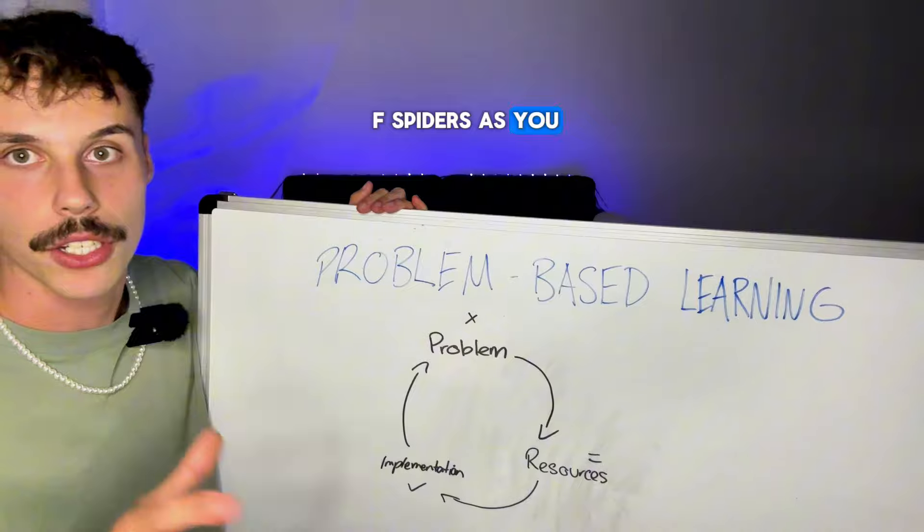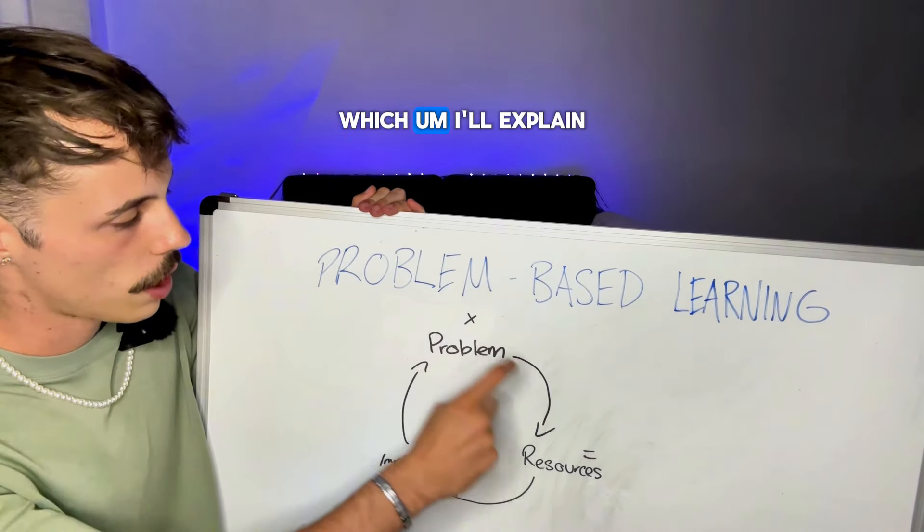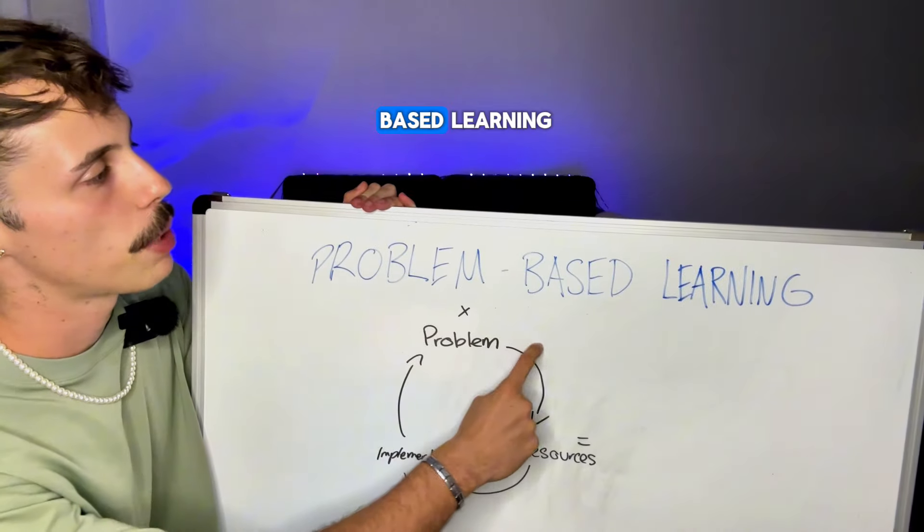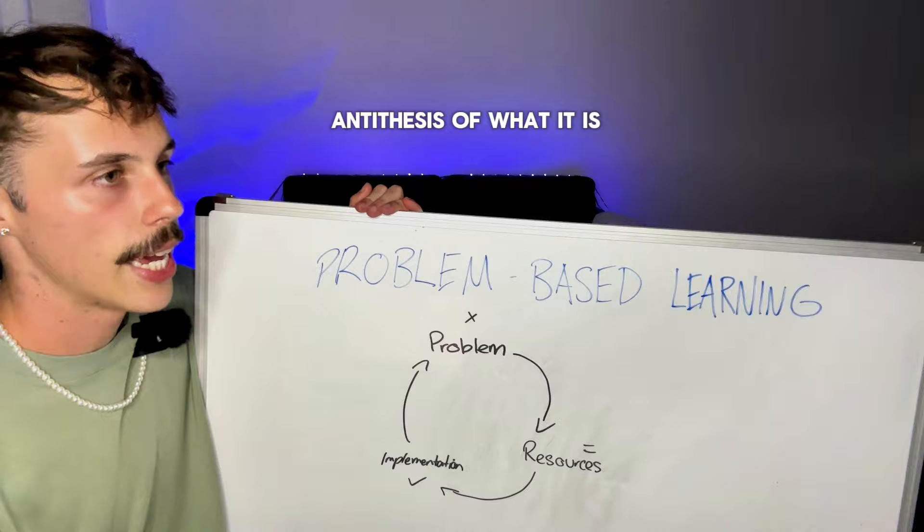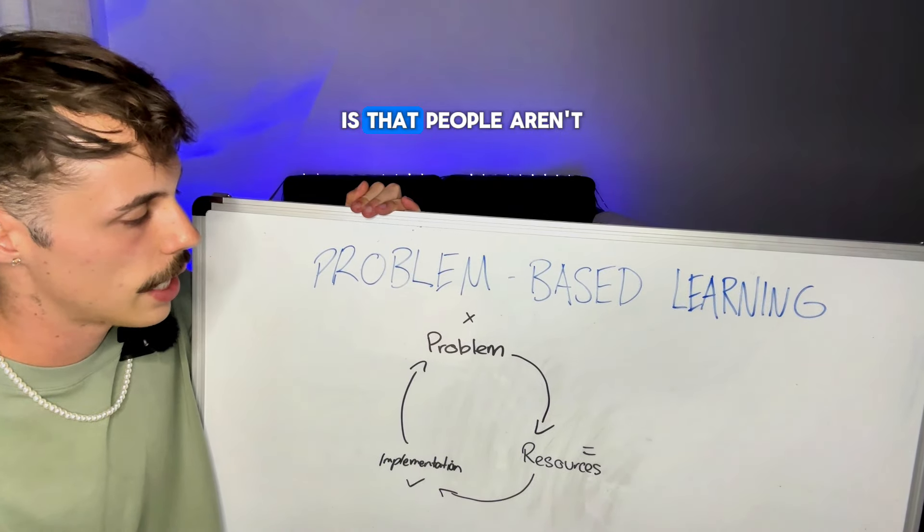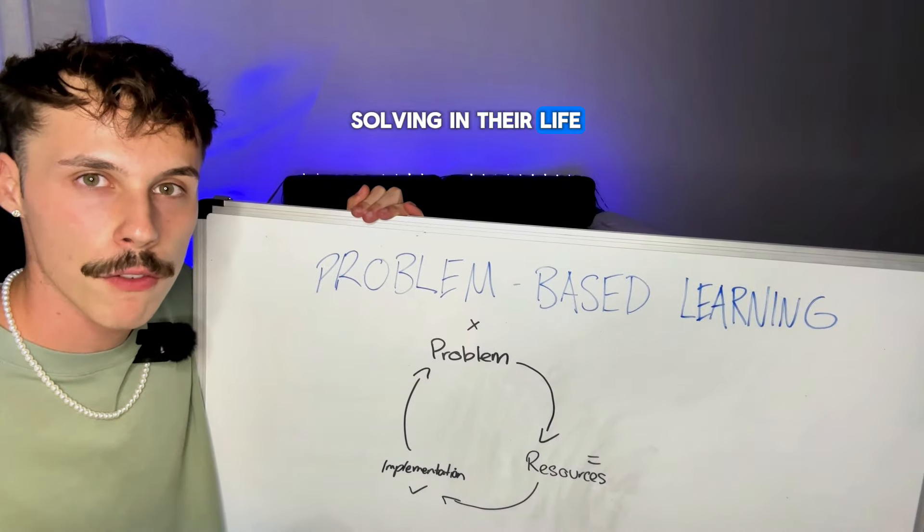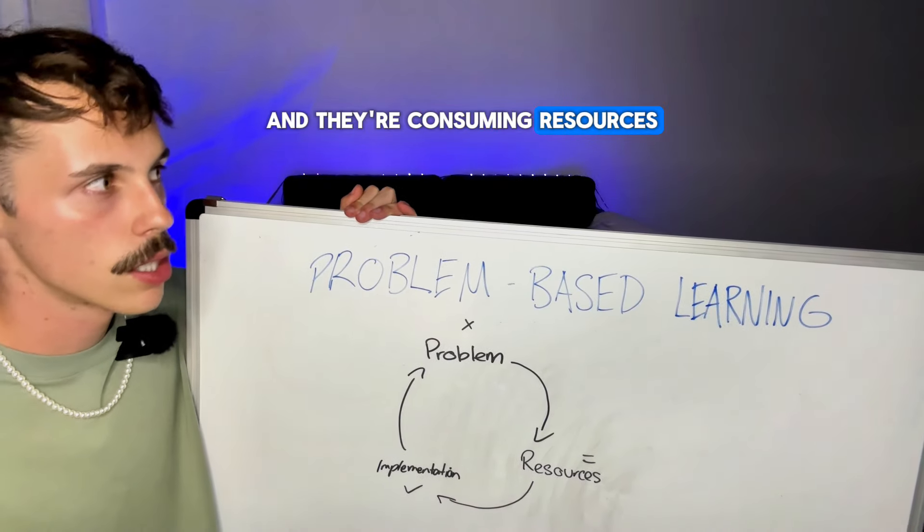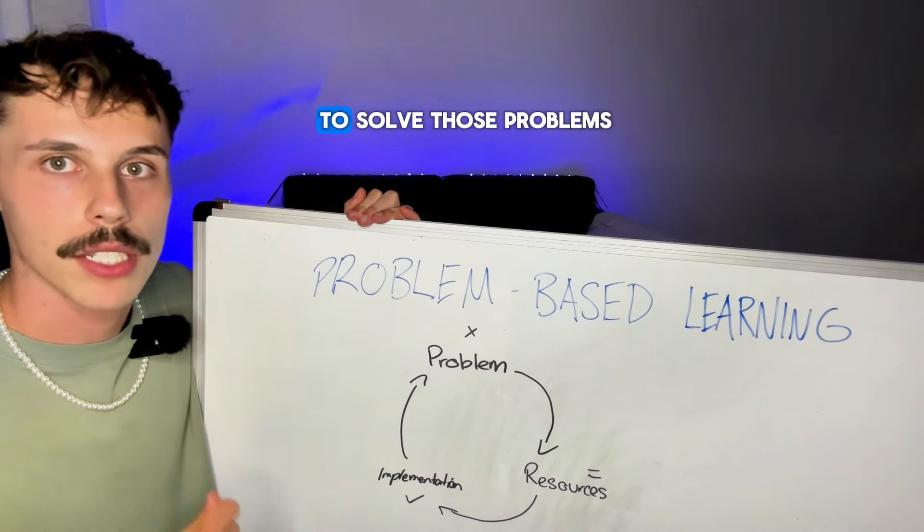We're not here to F spiders, as you guys know, but I've drawn up a little cycle here, which I'll explain in a second, but this is problem-based learning. And essentially what it is, well, I guess the antithesis of what it is, is that people aren't specific enough with the problems they're solving in their life and they're consuming resources or trying to find solutions which aren't specific enough to solve those problems.